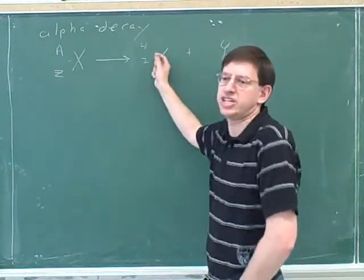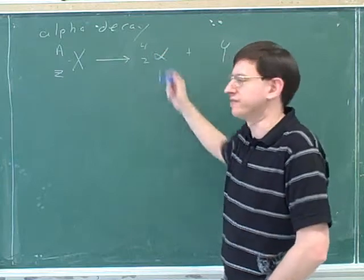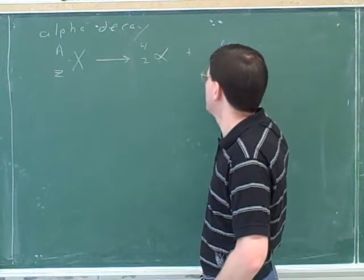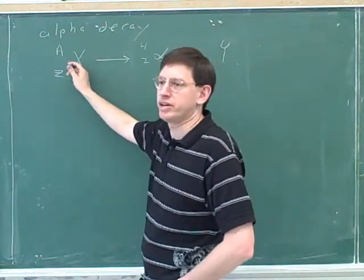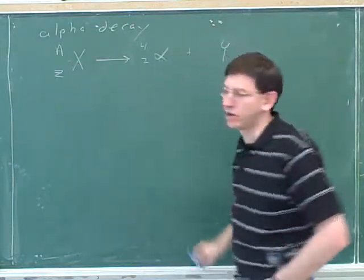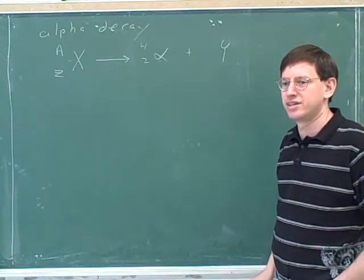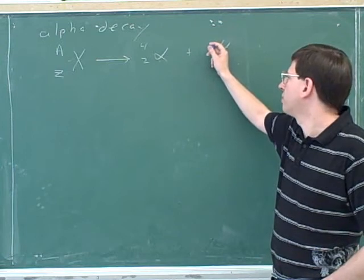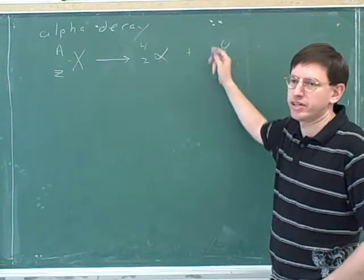If you wanted to, you could write this as HE. It doesn't matter if you write it as HE or as alpha because they're the same thing. How can we figure out the atomic number? X here is what's called the parent nucleus, and Y is what's called the daughter nucleus. What can we say about the mass number for this daughter nucleus? How can we calculate it if we knew A and Z?